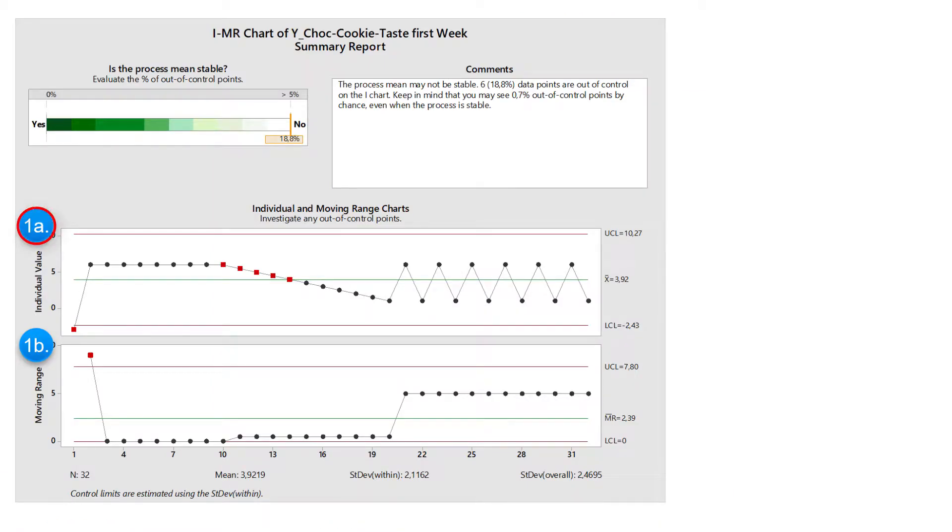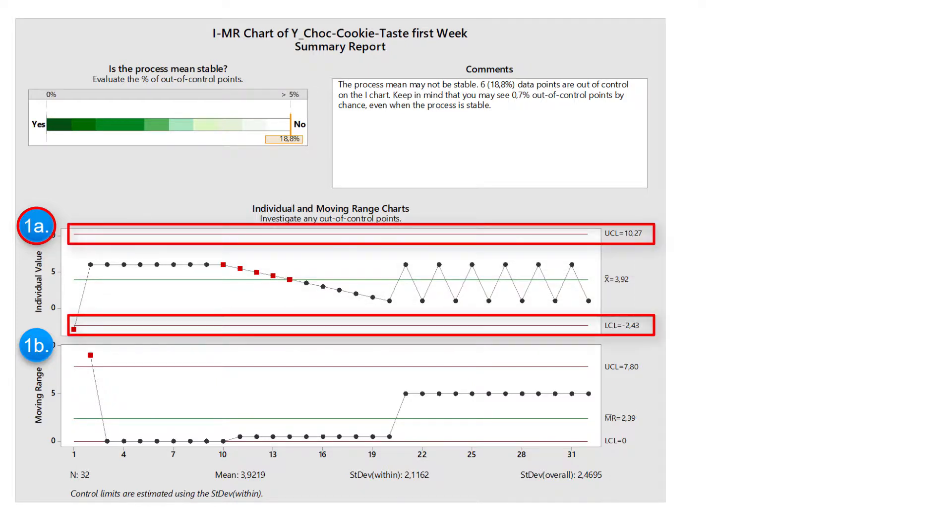The individual value chart shows the course of all values, a horizontal line for the mean, as well as for the upper and lower control limit.